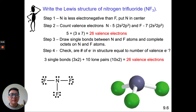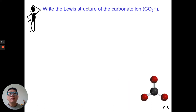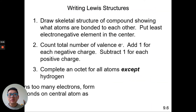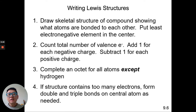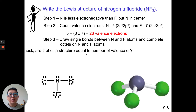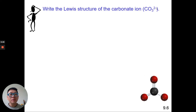Now let's draw the Lewis dot structure of the carbonate ion, CO3²⁻. The textbook says to add one dot for every negative charge. So for carbonate, which is CO3²⁻, we add two extra dots total to the entire molecule. First, which element goes in the center — carbon or oxygen? The least electronegative is carbon, since electronegativity increases up and to the right, and oxygen is further to the right on the periodic table. So carbon goes in the center surrounded by three oxygens.